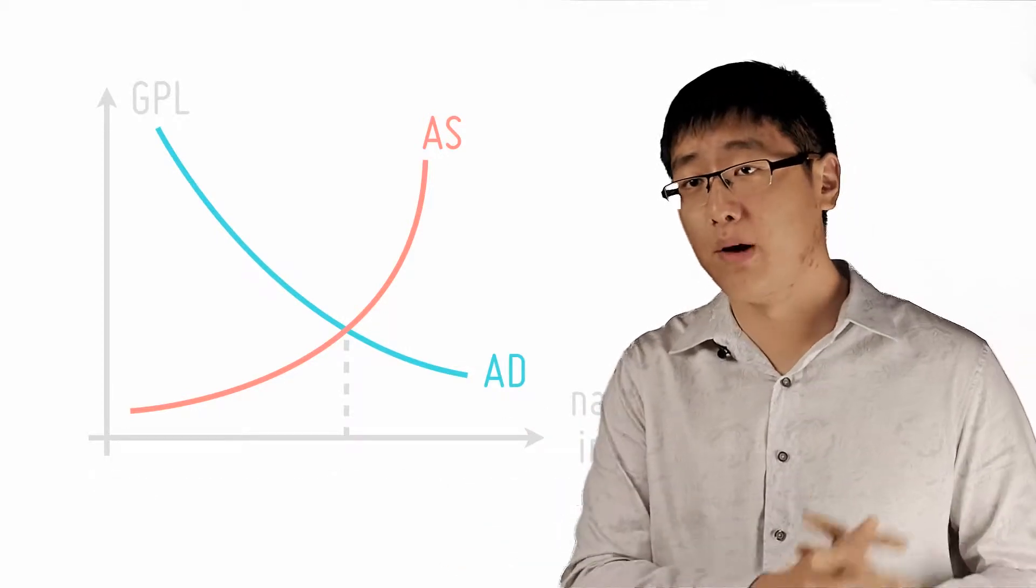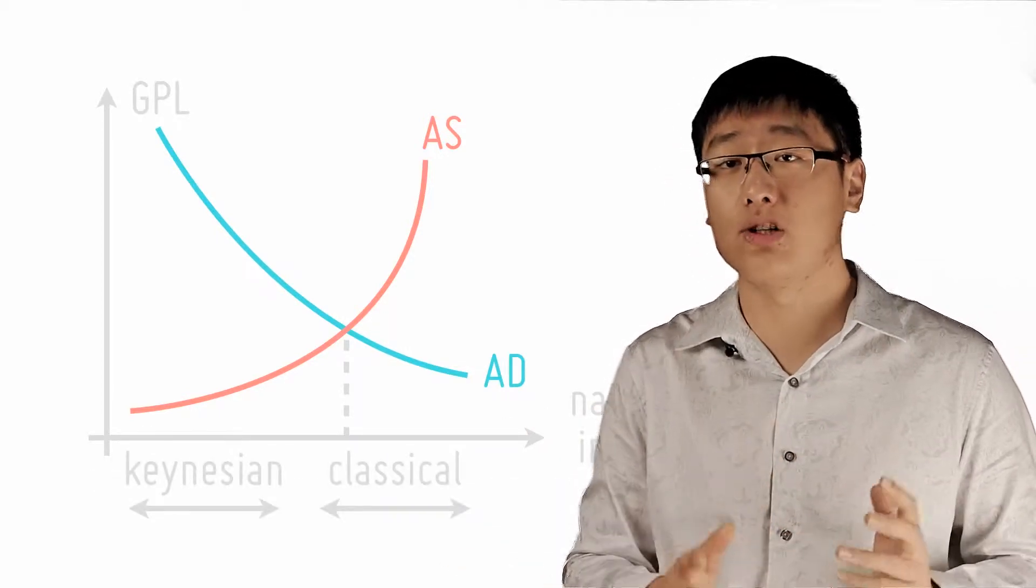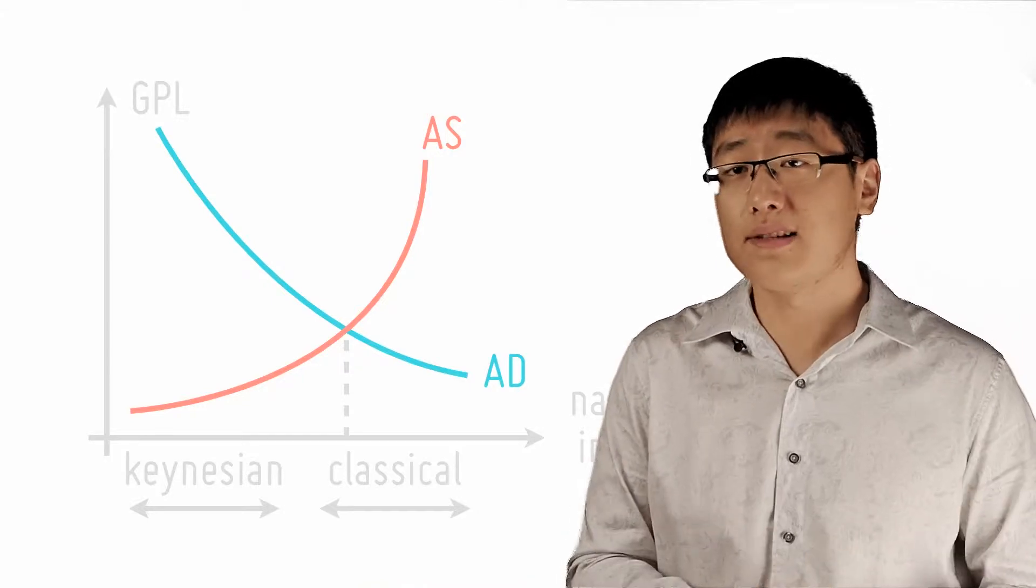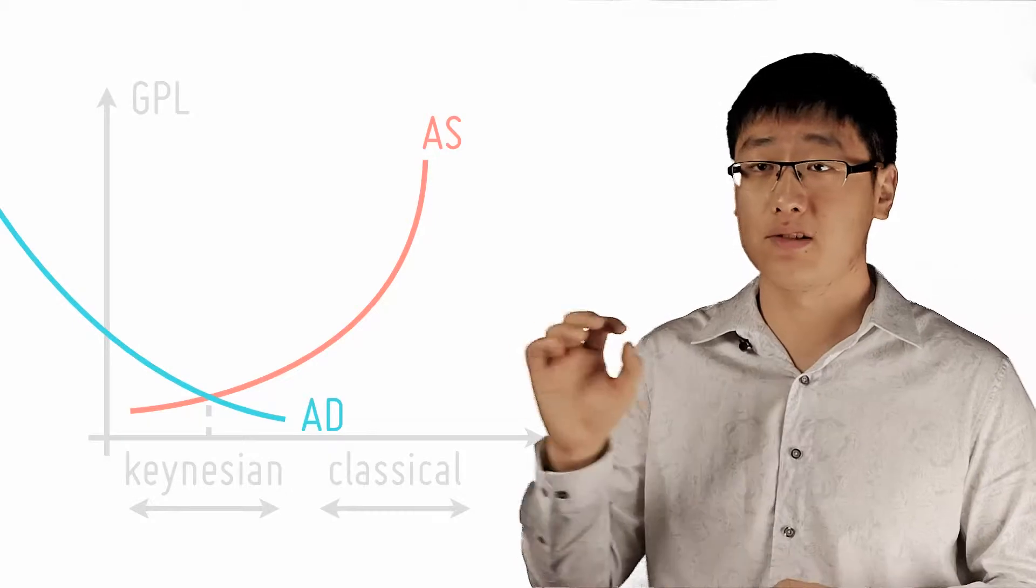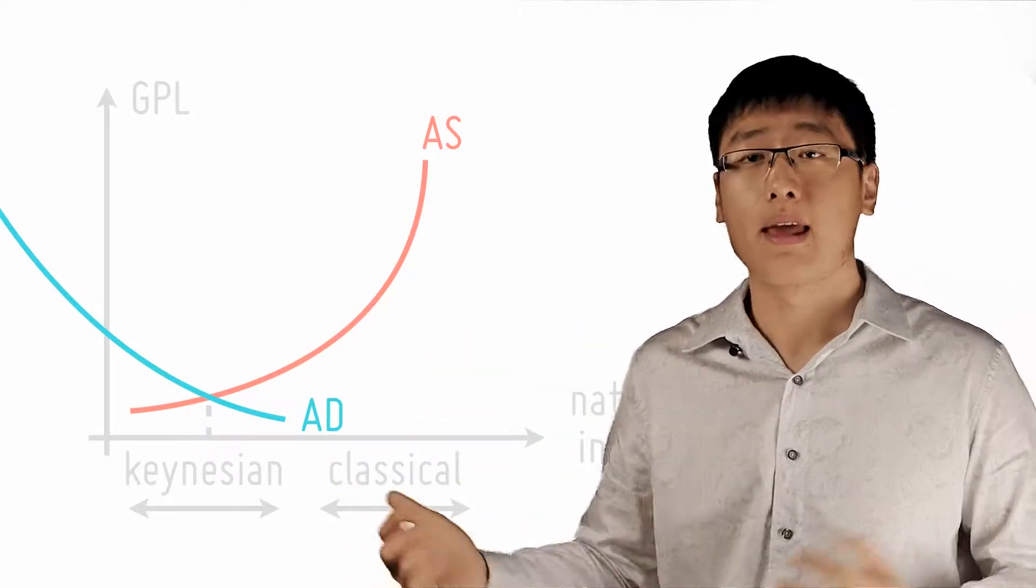Second, the effects on unemployment depend entirely on the position of the AD on the AS. So let's say that the AD is in the Keynesian region, hence there are lots of unemployed people in the market and there's lots of spare capacity in the economy.